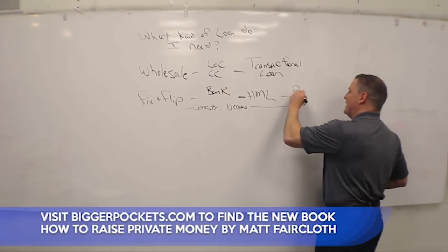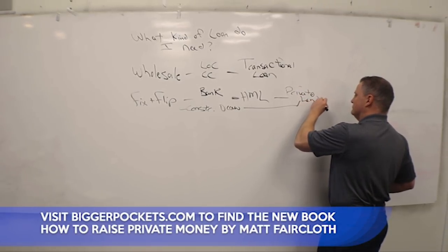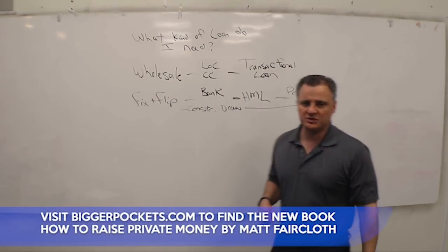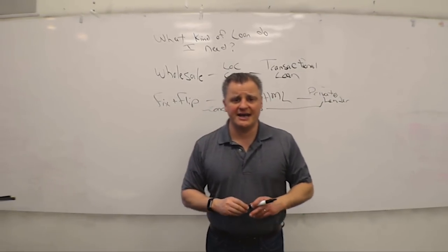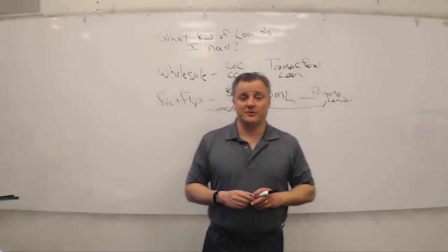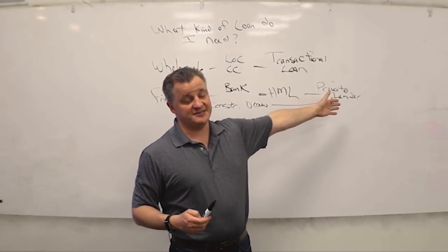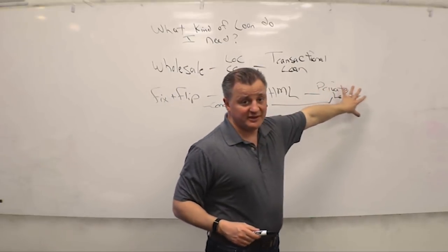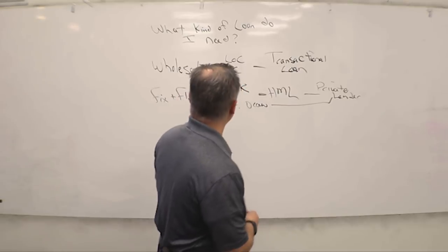The last one is a private lender. This is someone out of your own network that you might know that maybe has some IRA cash or has some of their own money that they can loan to you and make a great return on their money while they help you renovate houses. Either a private money lender, somebody you negotiated a deal with personally, a hard money lender, or a bank.